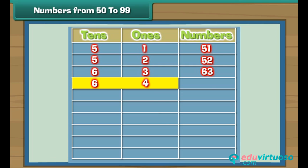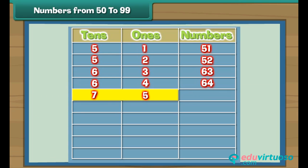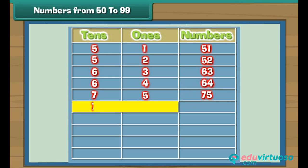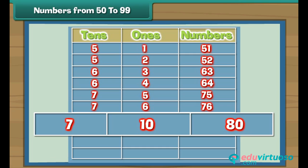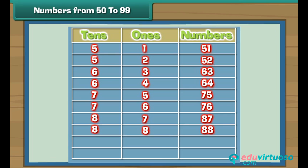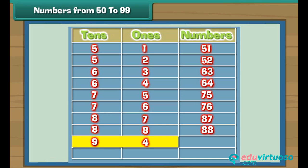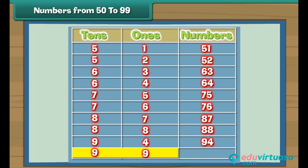Six tens and four is 64, six tens and ten is 70, seven tens and five is 75, seven tens and six is 76, seven tens and ten is 80, eight tens and seven is 87, eight tens and eight is 88, eight tens and ten is 90, nine tens and four is 94, nine tens and nine is 99.